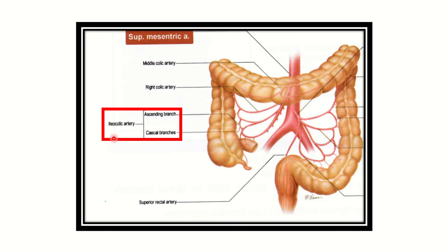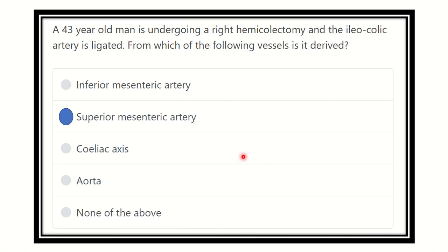From the superior mesenteric artery there are also other arteries, such as the middle colic artery, right colic artery, and branches of the ileal and jejunal arteries. So our answer is that the ileocolic artery is branched from the superior mesenteric artery.